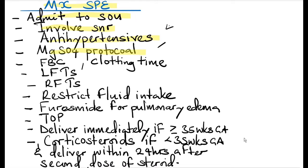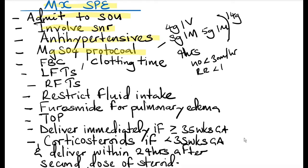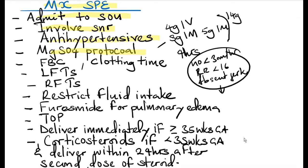Give a loading dose of 4 grams intravenously and 5 grams intramuscularly in each buttock, for a total loading dose of 14 grams. Then continue giving magnesium sulfate every 4 hours for at least 24 hours from the time of delivery. Monitor the patient for magnesium sulfate toxicity. Signs and symptoms include urine output of less than 30 mL per hour, respiratory rate of less than 16, and absent knee-jerk reflexes. When this occurs, give the antidote: calcium gluconate.